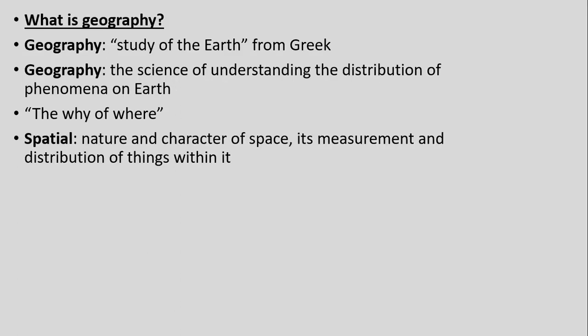Going back to that question — what exactly is geography? If we break this word down, it derives from an ancient Greek word. Breaking it apart into its two parts: 'geo,' meaning earth, and 'graphe,' meaning to study, to write about, or to create some sort of visual representation of earth. We can translate that roughly in a historical sense as something like 'to study the earth.'